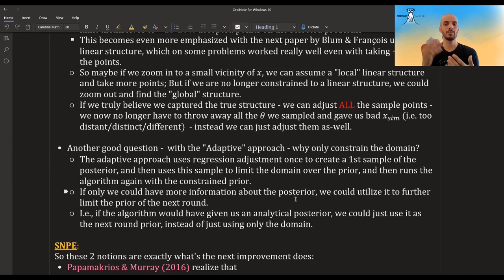But the one question is why only constrain the domain if we could get the true posterior. So the problem is that in rejection ABC, you just get the samples, you don't get an actual posterior. If we could somehow get an analytical posterior, we could just use it as the next round prior. We would have to make some adjustments as we will see, but this could also improve our inference.